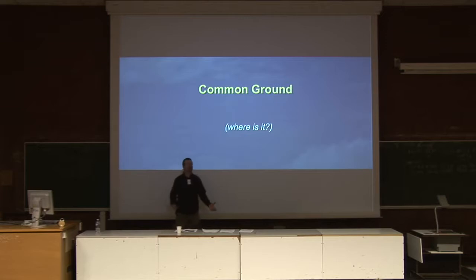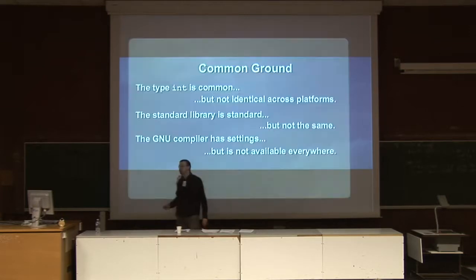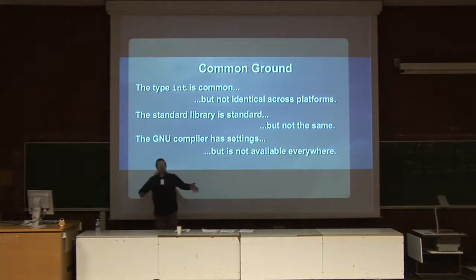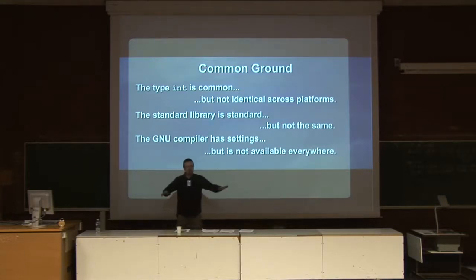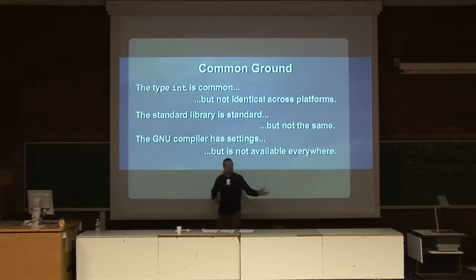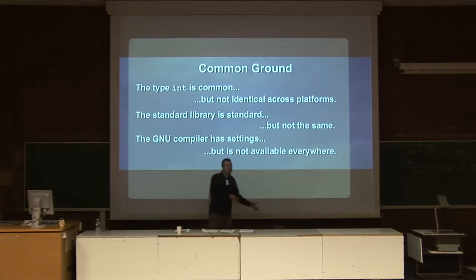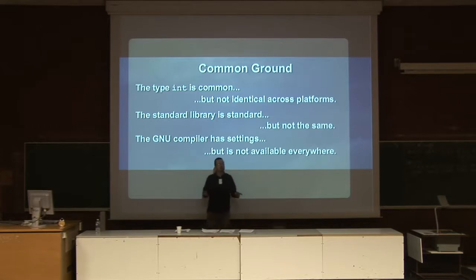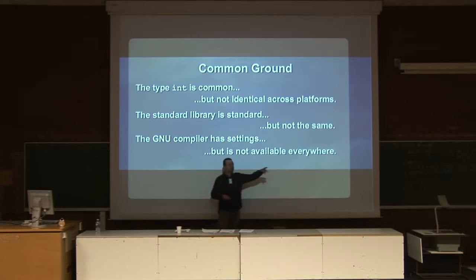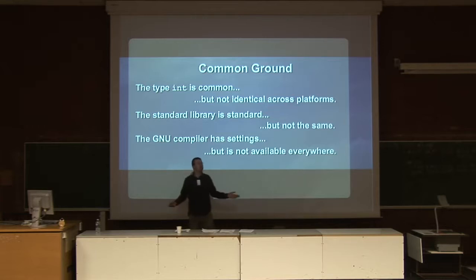If we're going to build a library, we need some common ground. Obviously integers — they're completely common everywhere except on the PlayStation 2 where they change, and Xbox is a little bit different. So we can't rely on integers being the same. The standard library is 'standard,' but there are so many standards to choose from. In the C library, which is what professional games programmers use, there's a function called qsort. It does not do a quicksort — all it does is a sort, which means if two keys are the same, they could be swapped. This will cause bugs, and you won't know about it.